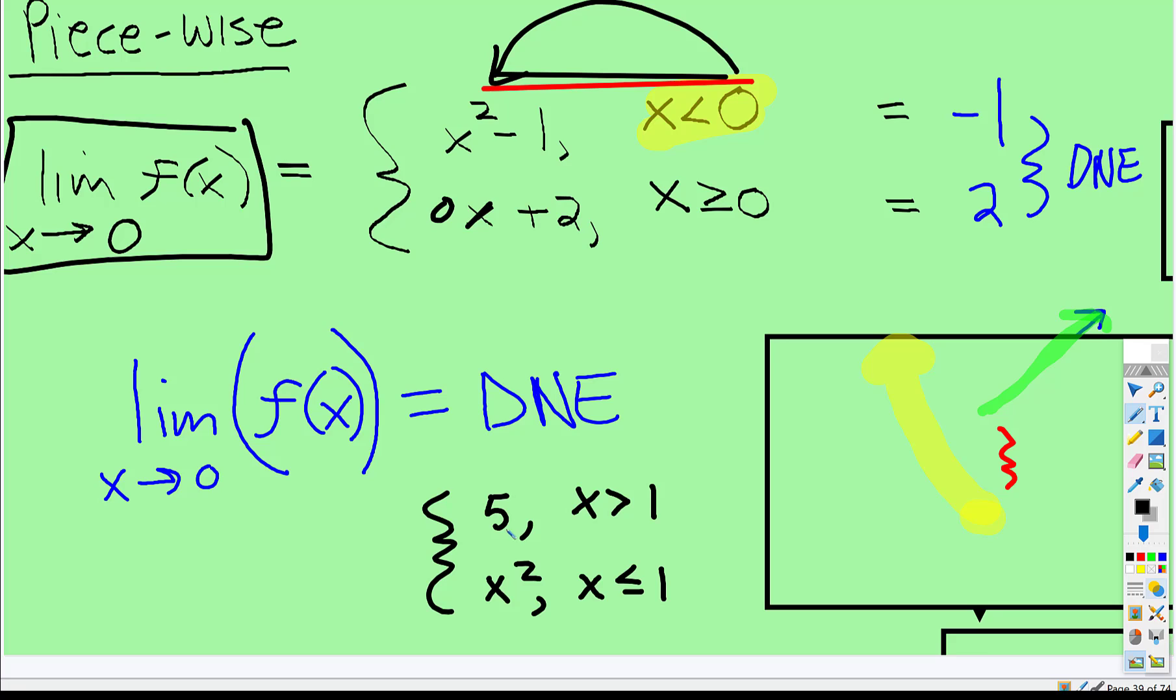Well, no matter what you do, this height will always be five. And when you plug one, you can't plug one into this because that's just a horizontal line. One squared is one. Those heights are different.